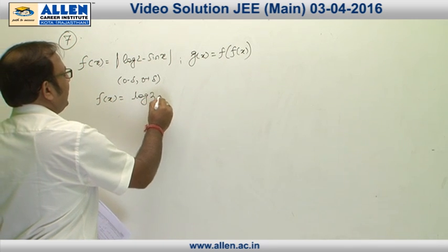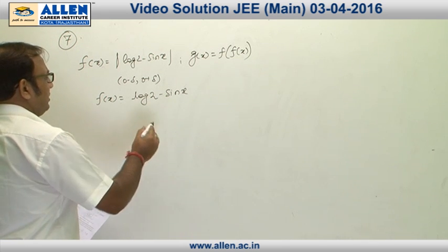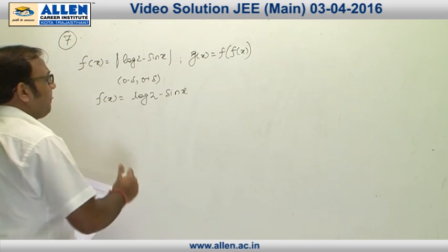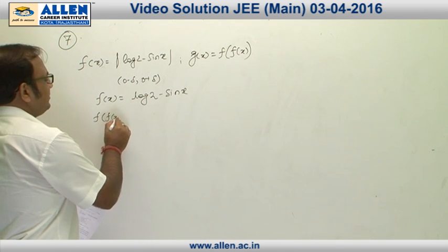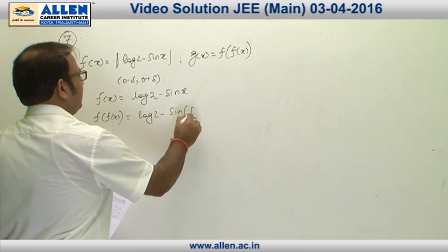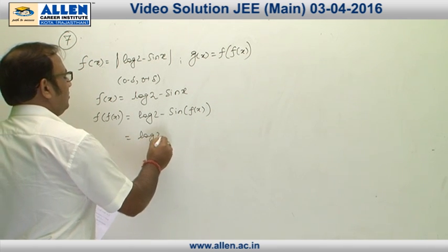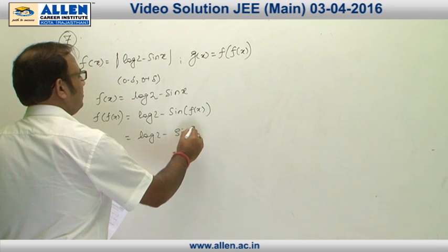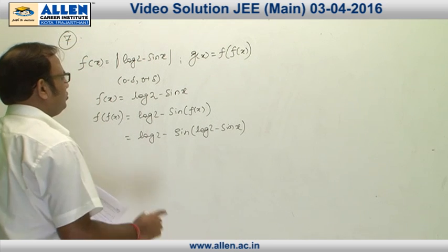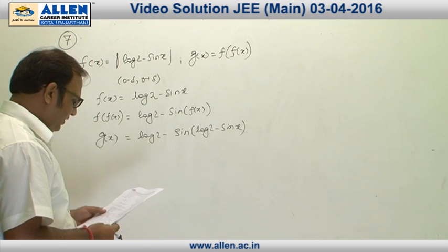f(x) is obviously a differentiable function, and g(x) = f(f(x)) = log(2 - sin(f(x))). Substituting, g(x) = log(2 - sin(log(2 - sin x))). We now need to find the derivative of g at x = 0.